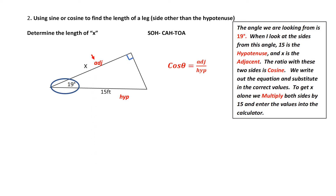Now, which ratio should I use? I know I've got A and I've got H. Which ratio has A and H in it? That would be cosine of theta is equal to adjacent over hypotenuse. I'm going to substitute in the values that I've got. I've got 19 degrees, so I'm going to replace theta with 19 degrees. Adjacent is x, so I replace adjacent with x. And finally, 15 is my hypotenuse, so I replace my denominator with 15. I want to get x alone, so x is being divided by 15 — I multiply both sides by 15. The 15s on the right-hand side cancel, leaving me with x is equal to 15 multiplied by cos of 19 degrees.